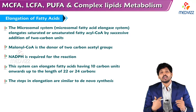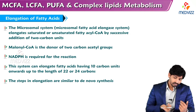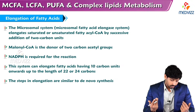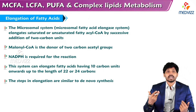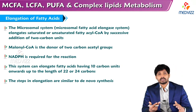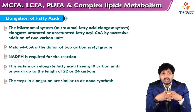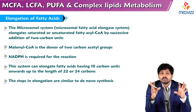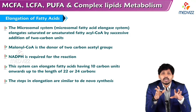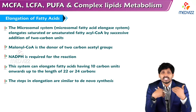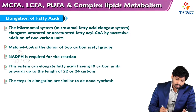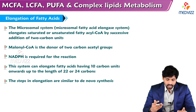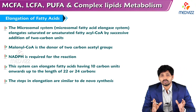Next is elongation of fatty acids. The microsomal system elongates saturated or unsaturated fatty acid-CoA by successive addition of two-carbon units. This is a step-by-step, sequential process. Malonyl CoA is the donor of two-carbon acetyl groups, and NADPH is also required. This system can elongate fatty acids having 10 carbon units onward up to a length of 22 or 24 carbons.